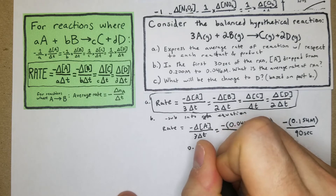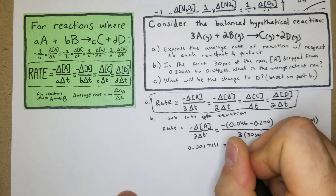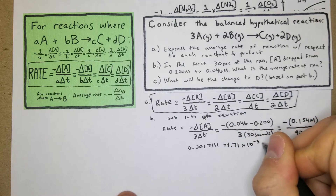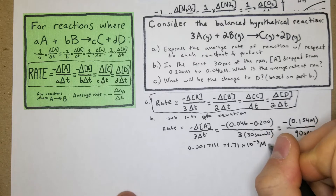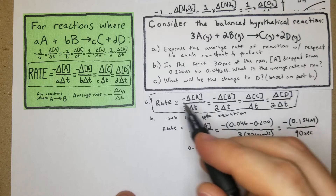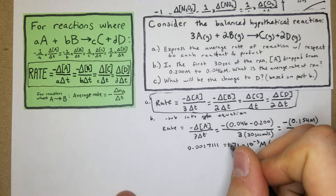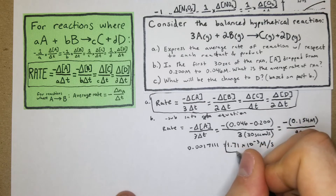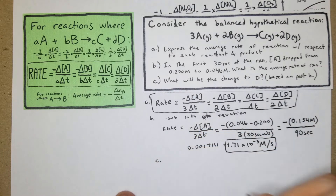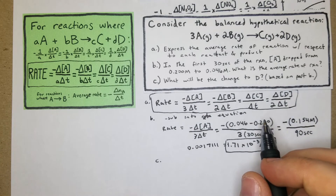Working that out gives 0.001711, which is 1.71 × 10⁻³ mol/s. That is our average rate of the reaction for part b.